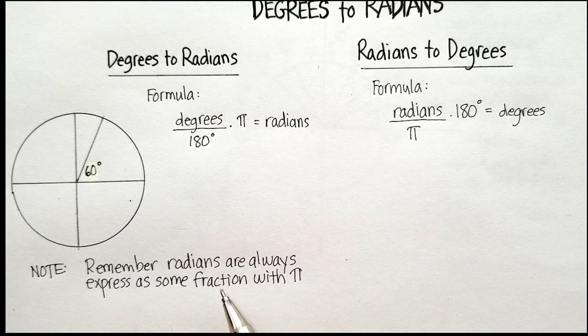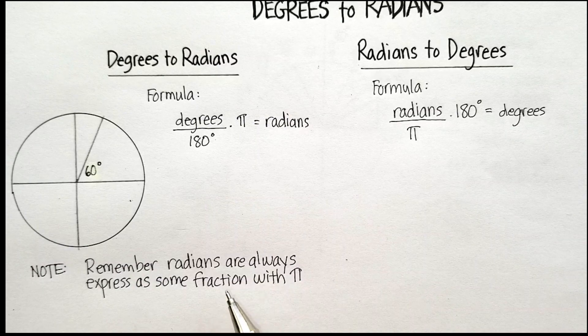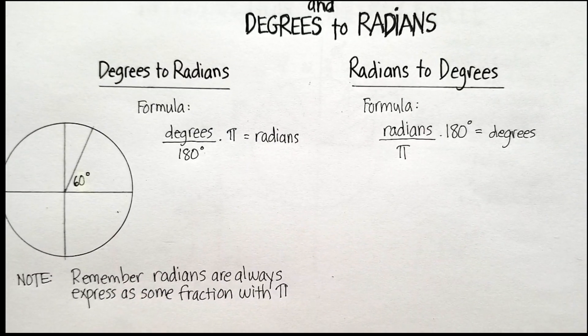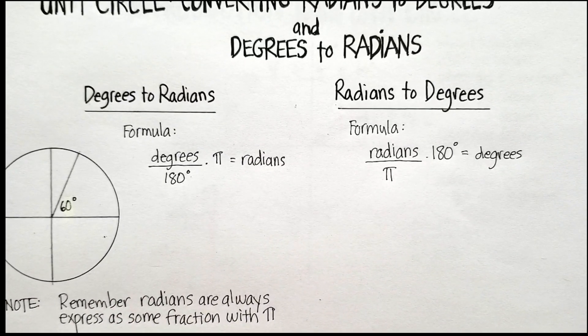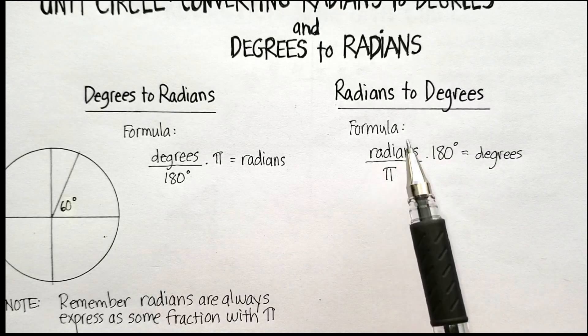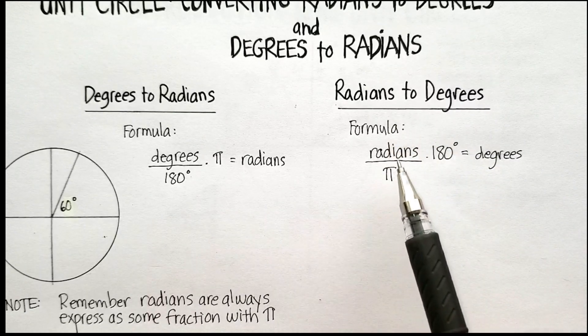Pi acting almost like a variable. And make sure that this is a fraction and not a decimal. I'll always use it as a fraction instead. And then the formula for radians to degrees is also pretty simple.